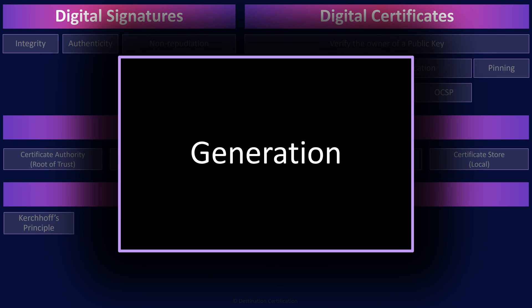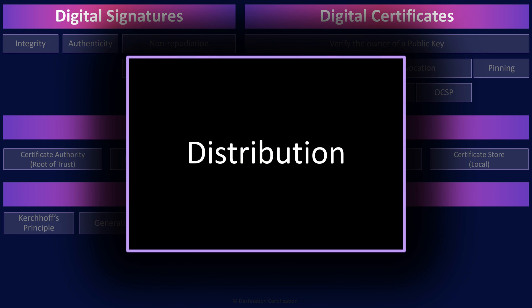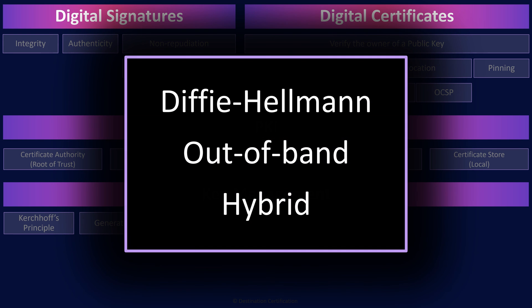Key generation or key creation is all about creating new symmetric or asymmetric key pairs. What is of critical importance is that each new key must be randomly selected out of the entire key space to avoid the plague of cryptography: patterns. Key distribution is focused on securely transmitting new keys to whoever may need them and no one else. One option is to use the Diffie-Hellman key exchange protocol, which uses asymmetric cryptography techniques to generate the same key for two people without actually sending the key itself.